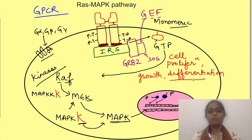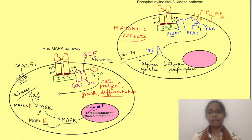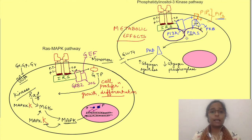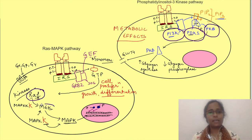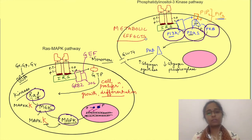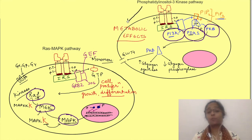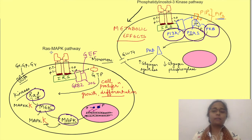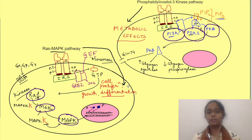Both pathways involve three kinases each. In the PI3K pathway it is PI3K, then PDK1, and then protein kinase B (AKT). In the Ras-MAP kinase pathway it is RAF, MEK, and MAP kinase. In summary, insulin acts by two signal transduction pathways: the PI3K pathway responsible mainly for its metabolic and some survival actions, and the Ras-MAP kinase pathway responsible for its effects on cell proliferation, growth, and differentiation.